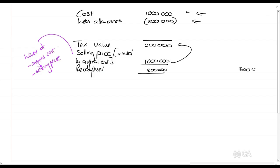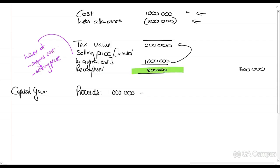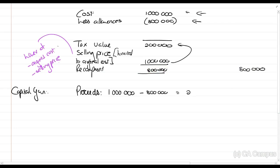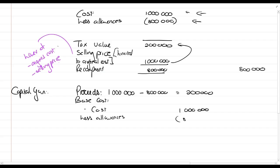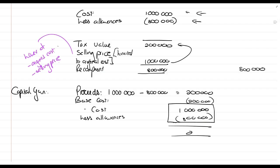One million minus 200,000 rands gives us 800,000 rands recoupment — we've recovered 100% of the cost, so SARS has recovered 100% of its allowances. That 800,000 rands goes into our income column. For the capital gain: proceeds are the actual selling price of one million rands, less the recoupment of 800,000 rands. The base cost is cost of one million rands less allowances of 800,000 rands, giving a 200,000 rands base cost — and a nil capital gain.